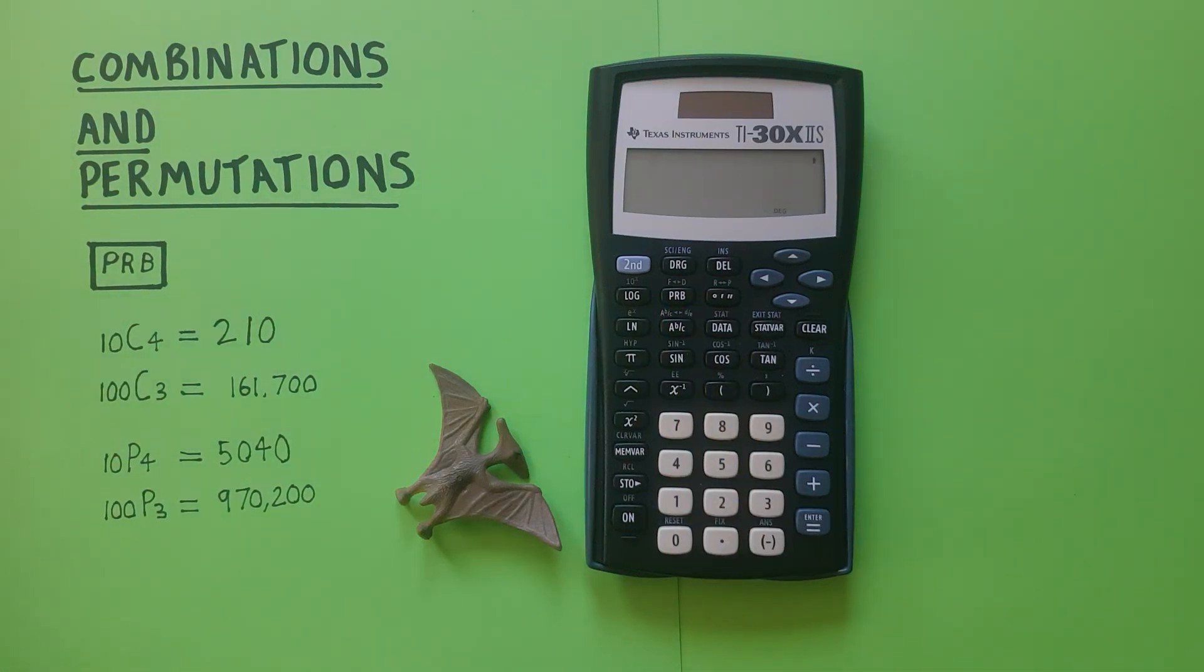Alright, so for combinations which means choosing a certain number of objects from a set in which the order does not matter. For this example we use 10 choose 4 or selecting 4 objects from a set of 10.